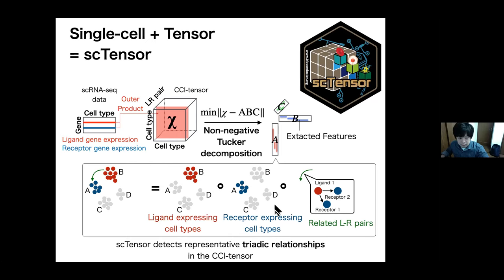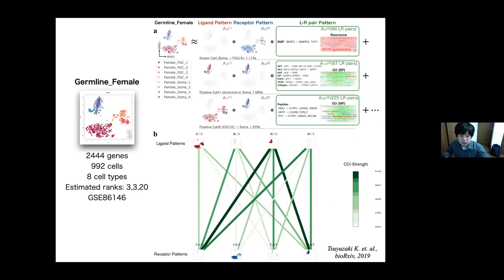This is a use case of the CCI tensor. I applied the CCI tensor to a germline data. Using CCI tensor, we could extract the triadic relationship, as you can see in figure A. In figure B, upper row means ligand expressing cell types, and the bottom row means receptor-expressing cell types. Moreover, this figure shows ligand genes tend to be expressed in this cluster, but the related receptor-expressing cell types have at least two types, like this pattern and this pattern.